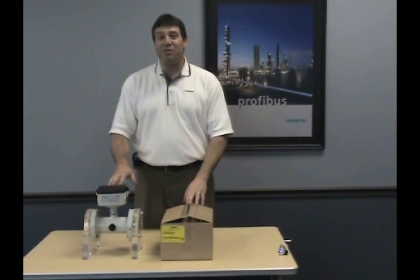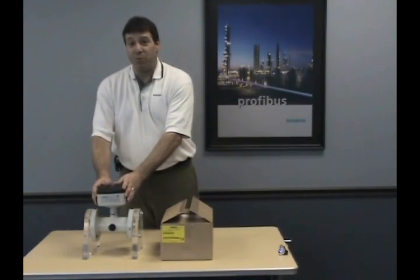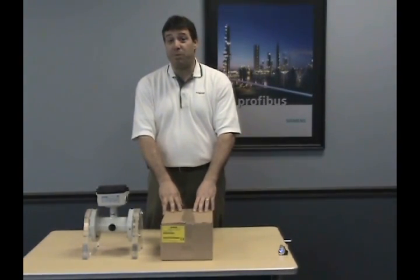Today we are going to illustrate how to properly set up an integral magnetic flow meter. The flow meter is received as a minimum of two items: the flow tube or sensor itself, and the transmitter, which is always shipped in a separate box.